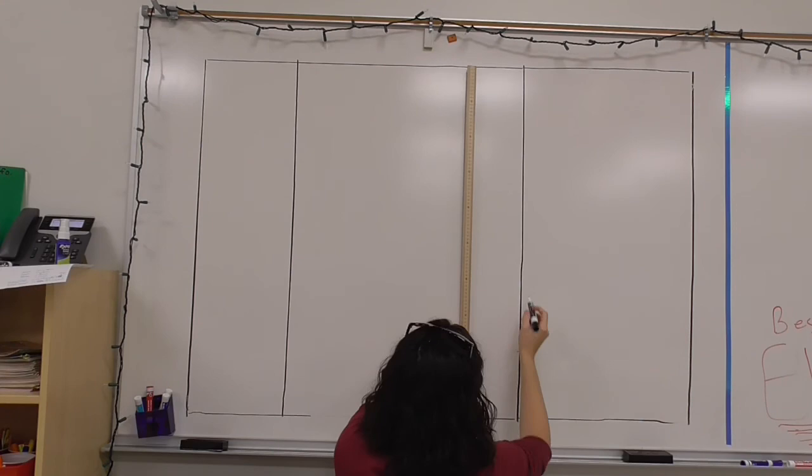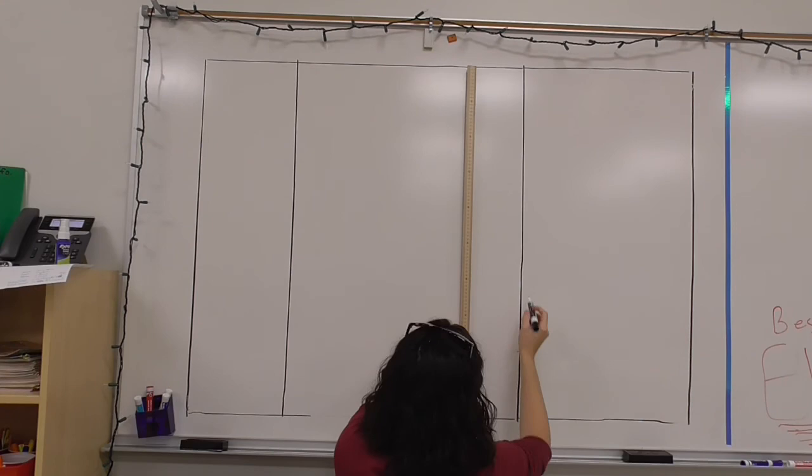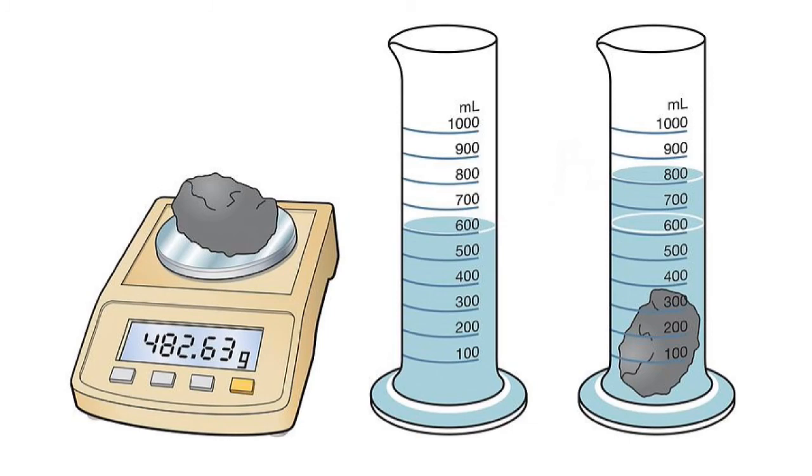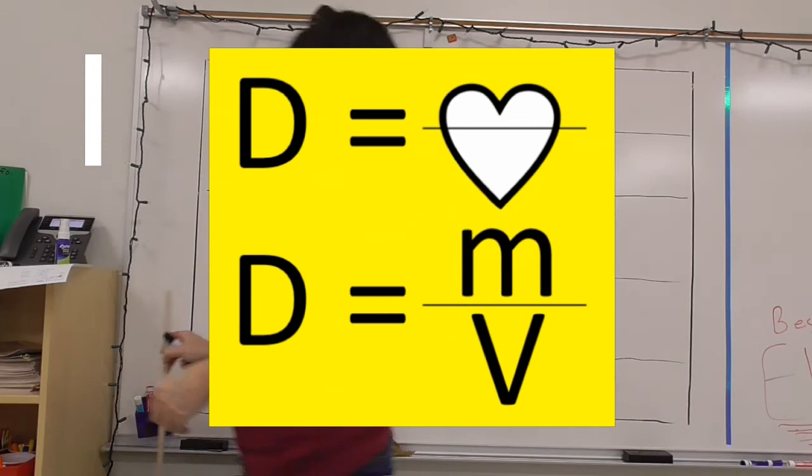However, we're going to be calculating density. And when you find the density of an object, you're going to need to know the mass in grams of that object and its volume, which we measure in either milliliters or centimeters cubed. You'll just need to divide the mass by the volume in order to figure out the object's density.